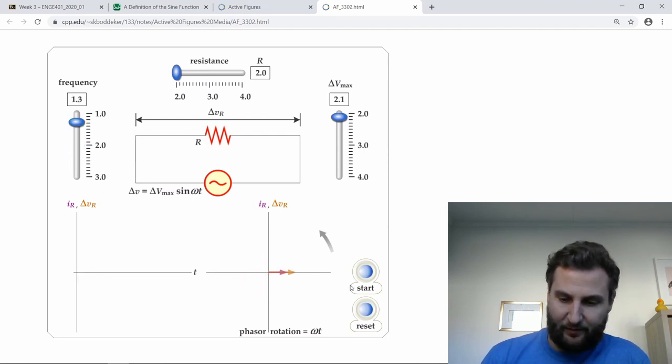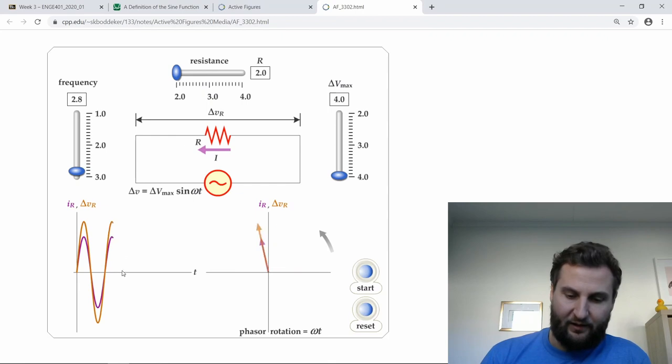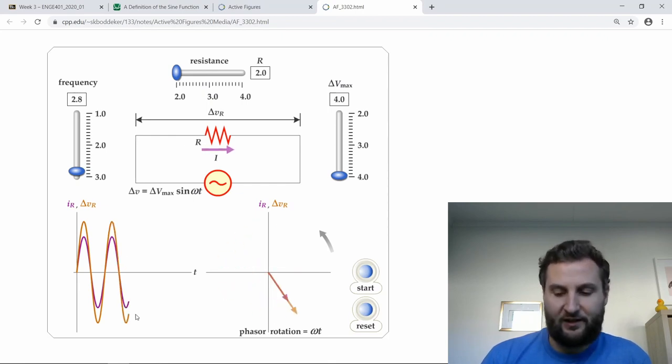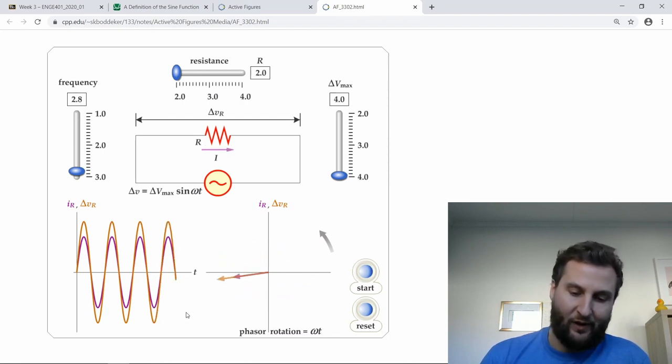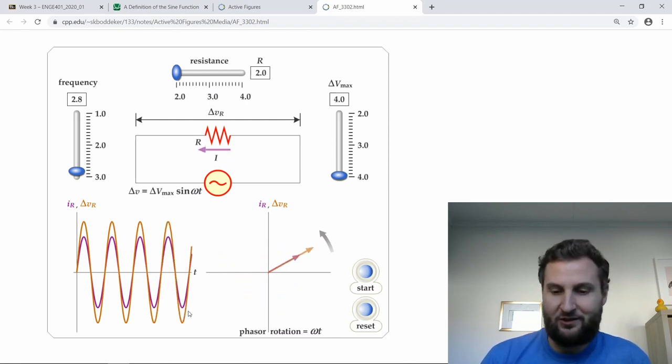So we can crank up the voltage and see how that affects things. And we can crank up the frequency. Let's see, is that what I want to do? That was down. This way is cranking up the voltage, and let's see what happens. So now delta V peaks at a higher rate, and then let's crank up the frequency too. And so the frequency is that cycles per second. So the phasor will spin faster, and it will oscillate more times in either one second or more times in two pi radians.